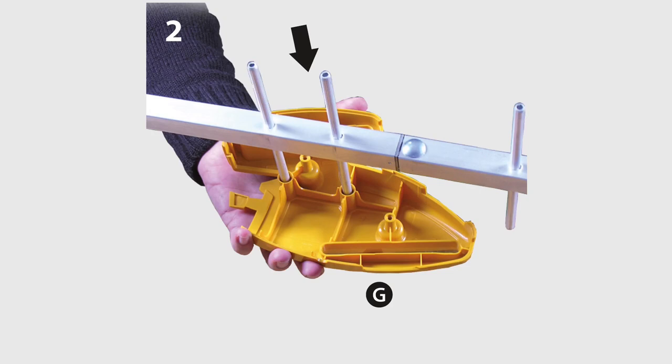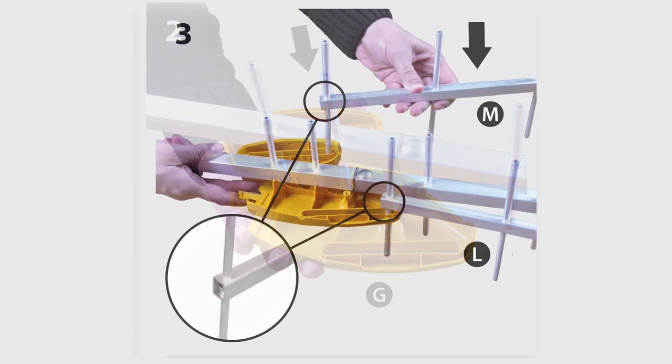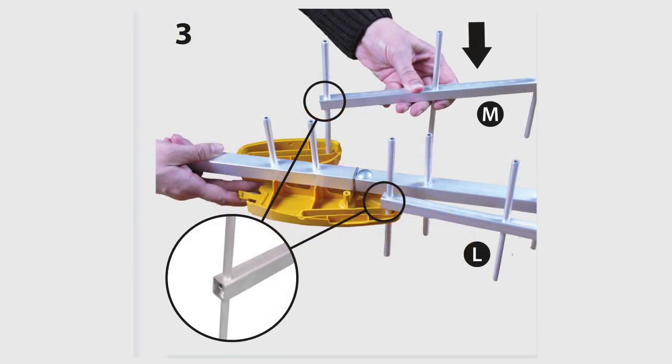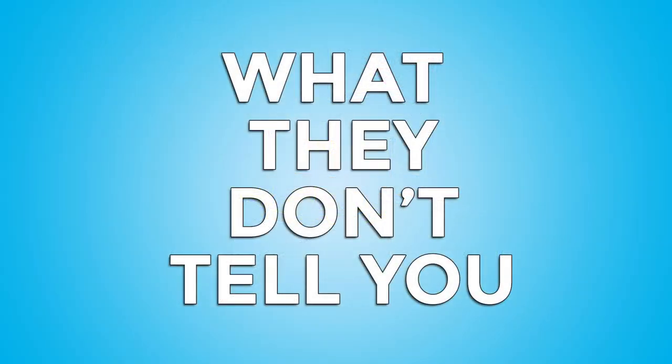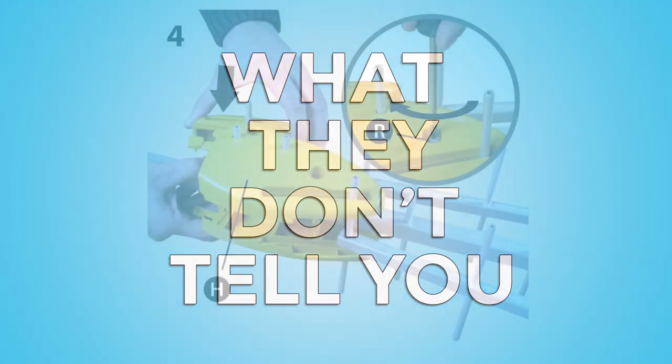From there, take the two posts and feed them into this yellow plastic shell. Then, take the two other posts called directors and feed them in the slots on the top and bottom of that very same shell. Now, what they don't tell you is that you might want to rub those posts with a little bit of WD-40 or grease so that they slide a little bit. That's important for later.